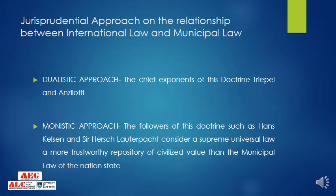The chief exponents of the dualistic doctrine are Triepel and Anzilotti. According to monistic theory, international law and municipal law are both part of the same universal legal order, and international law is supreme even within the municipal sphere. The main exponents of monism are Hans Kelsen and Salotta Pact. In dualism there are two branches of law; in monism there is just one legal system.